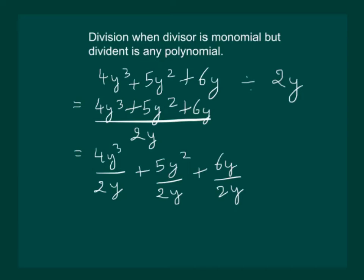And from here we will solve as usual. We will get 2 to the 4 and one of the y's will get cancelled remaining y square. Similarly here one of the y's will get cancelled and y power 1 will remain. 2 3's are 6 and y gets cancelled. So we are left with 2y square plus 5 by 2y plus 3. Which is our required answer.